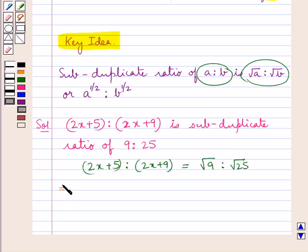Or, this means (2x + 5)/(2x + 9) = √9/√25.